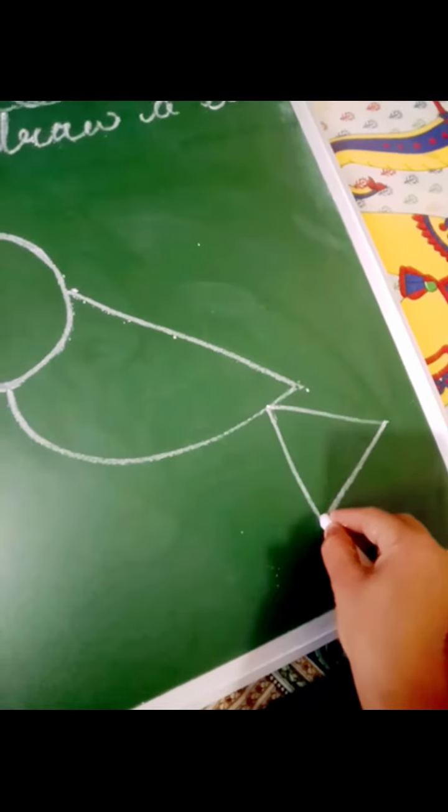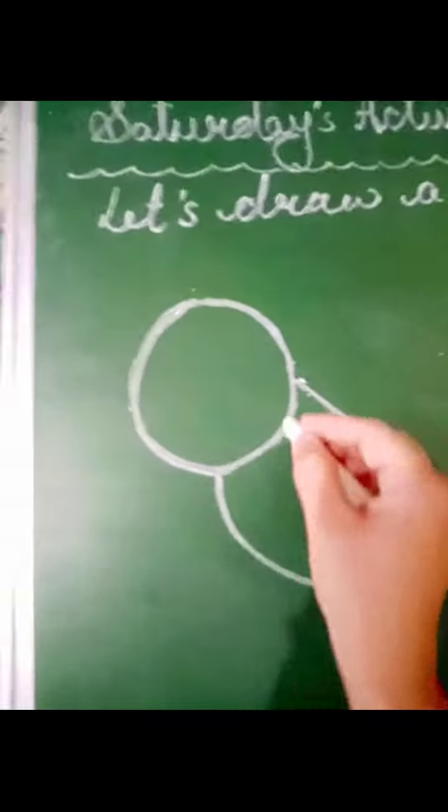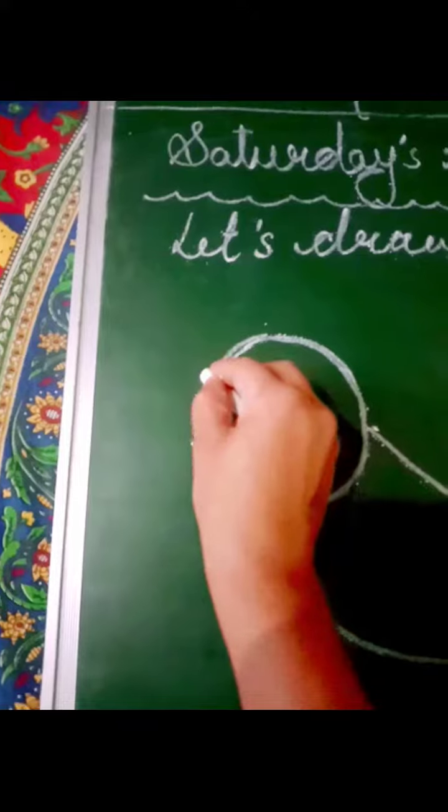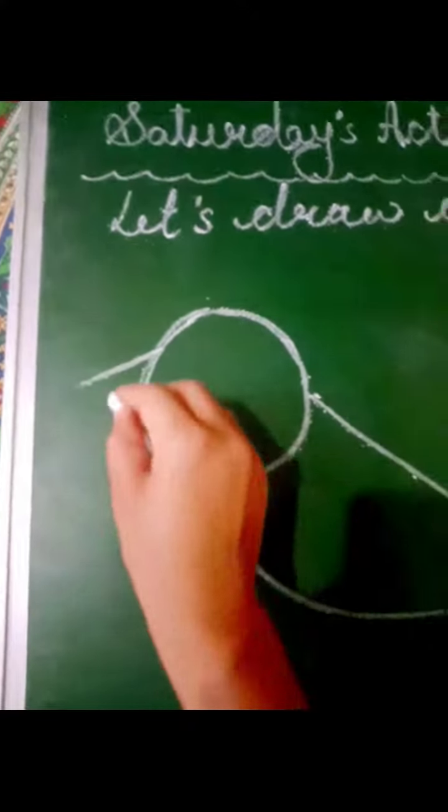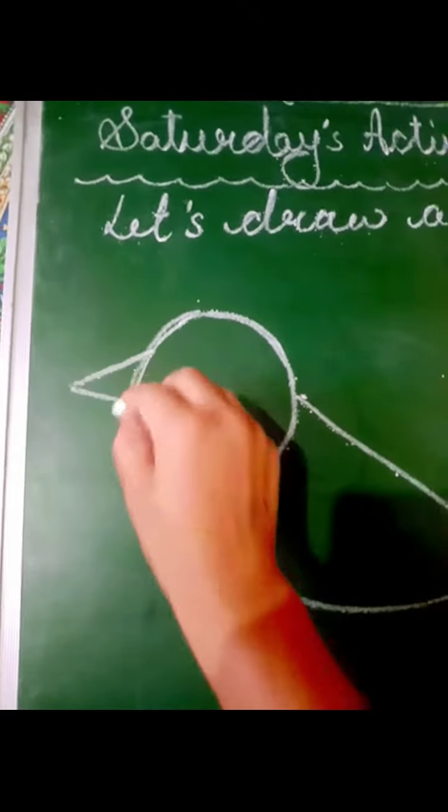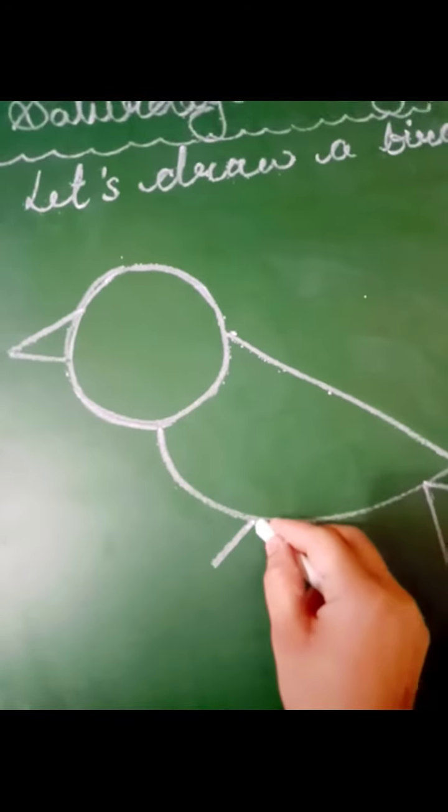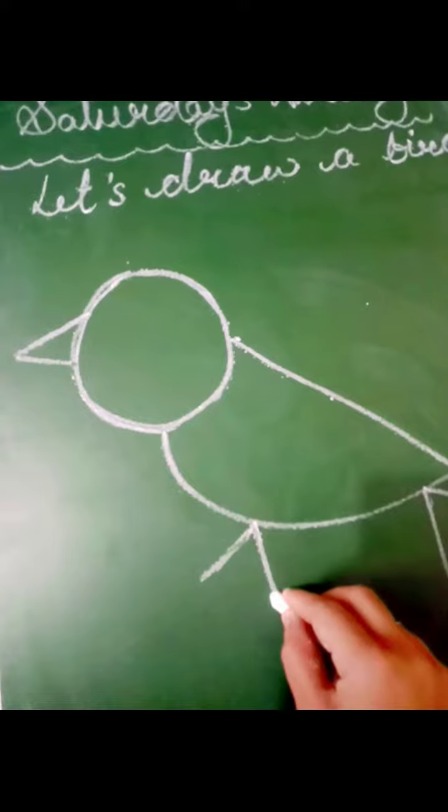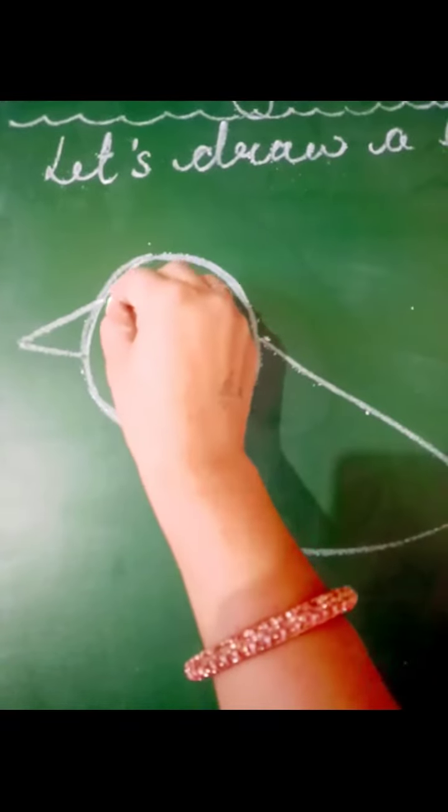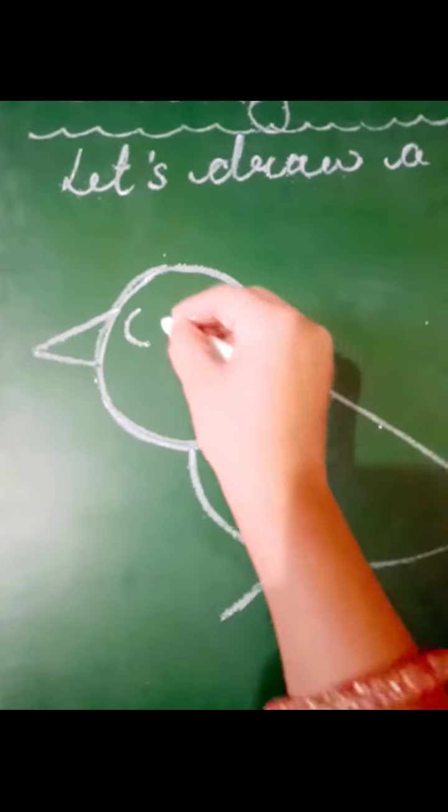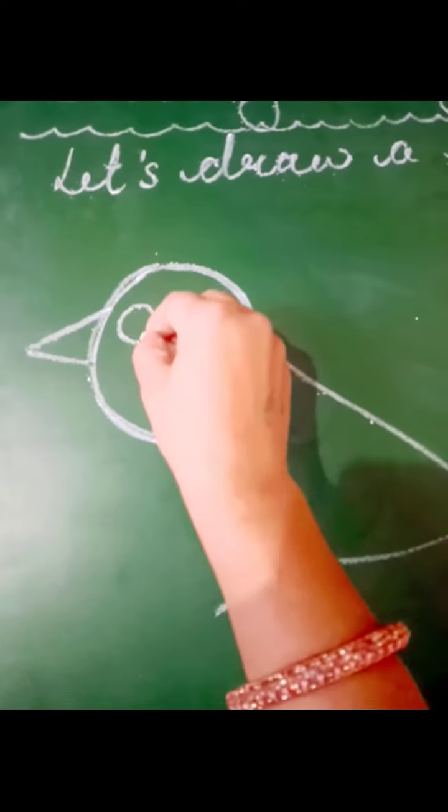And slanting line again, here one more slanting line, another slanting line here, a slanting line, another slanting line. A small curve, another small curve. And what is this? This is a bird!